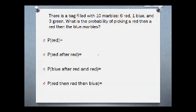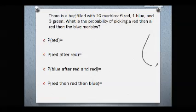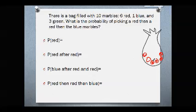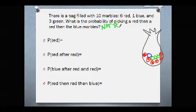Let's try another one. There's a bag filled with ten marbles — six red, one blue, and three green. What's the probability of picking a red, then a red, and then a blue marble? I'm going to assume there's no replacement, so they're not putting the marble back in the bag each time. The probability of getting a red marble: there are six red marbles out of ten total, giving a three-fifths chance.